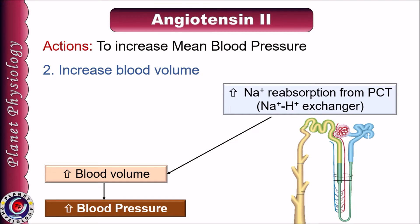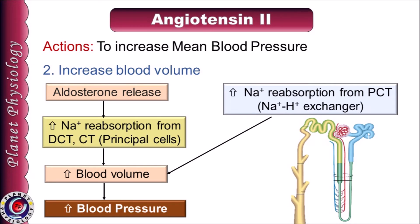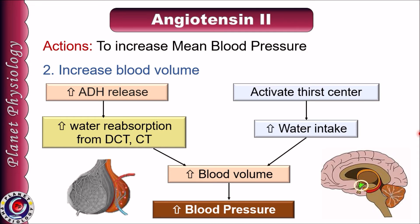Angiotensin 2 also increases blood pressure by increasing blood volume. It directly acts on the proximal convoluted tubule to stimulate the sodium-hydrogen exchanger, facilitating sodium and water retention. It also causes aldosterone release from the adrenal cortex, which in turn increases sodium reabsorption from principal cells of distal convoluted tubules and collecting tubules, helping water retention and increasing blood volume. Aldosterone also upregulates epithelial sodium channels in collecting ducts. Angiotensin 2 stimulates antidiuretic hormone release from the posterior pituitary, which inserts aquaporin channels in principal cells of DCT and cortical tubules and increases blood volume. It also activates the thirst center and increases water intake, leading to a rise in blood volume and hence blood pressure.